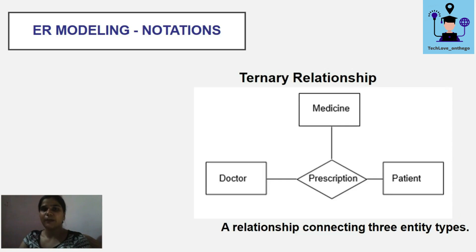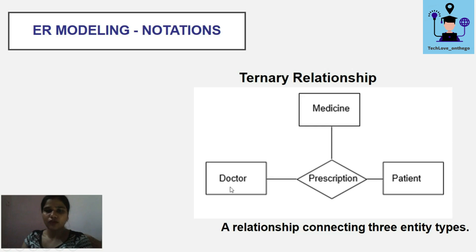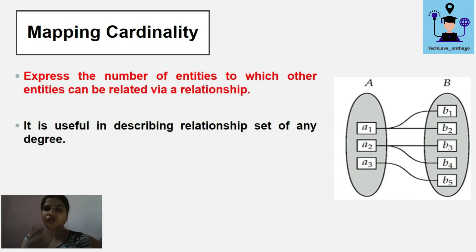A ternary relationship is one in which three entities are participating. For example, doctor, medicine, and patient are three entities in a 'prescription' relationship — the doctor prescribes medicine to the patient. This connects three entity types, making it a ternary relationship.